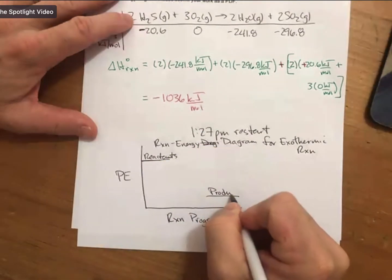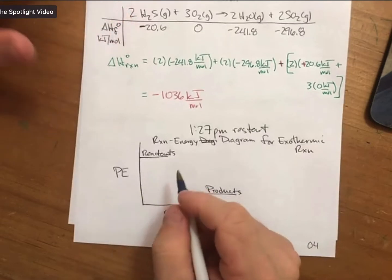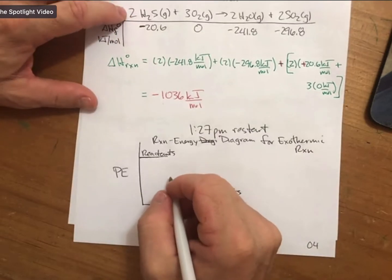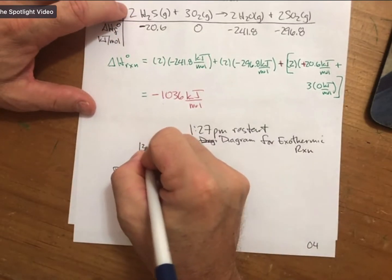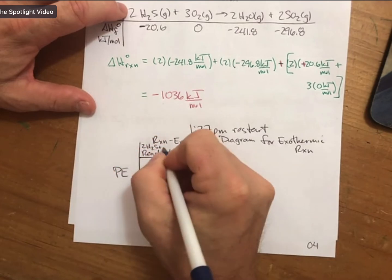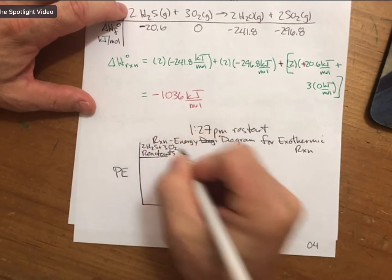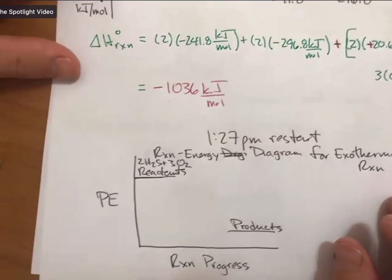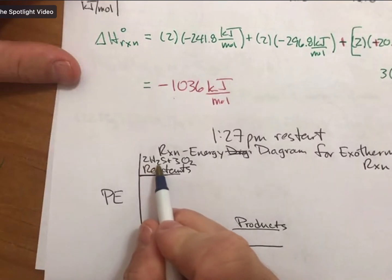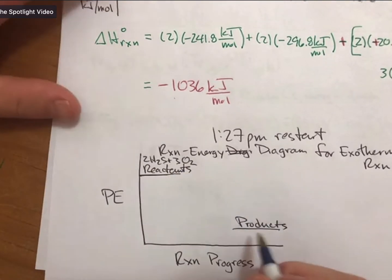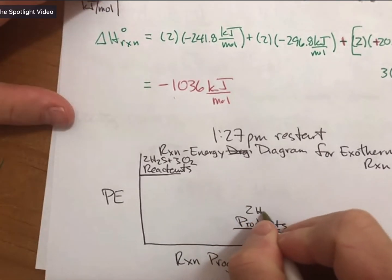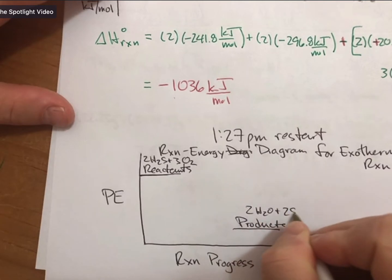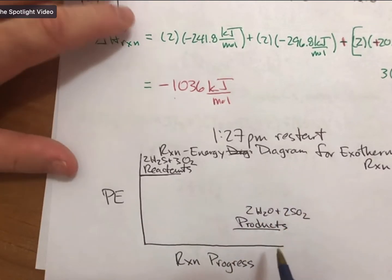I should actually write my reactants up here, so I will: 2H2S plus 3O2. And typically it's the reactants, and the products down here will be 2H2O plus 2SO2.